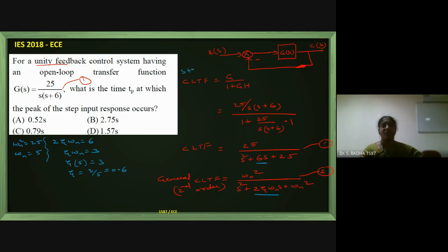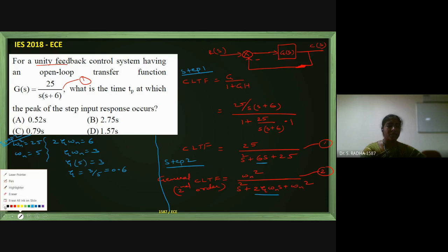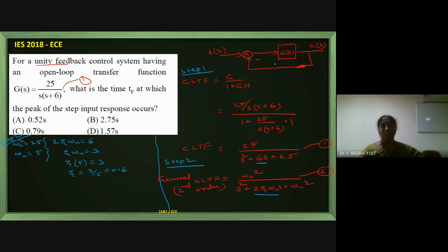In Step 1 we calculated the closed loop transfer function; in Step 2 we found ωn = 5 and η = 0.6. The question asks for the peak time tp — the time at which the peak of the step input response occurs. The graph of a second order system rises above the steady state then damps down; that maximum point occurs at peak time.